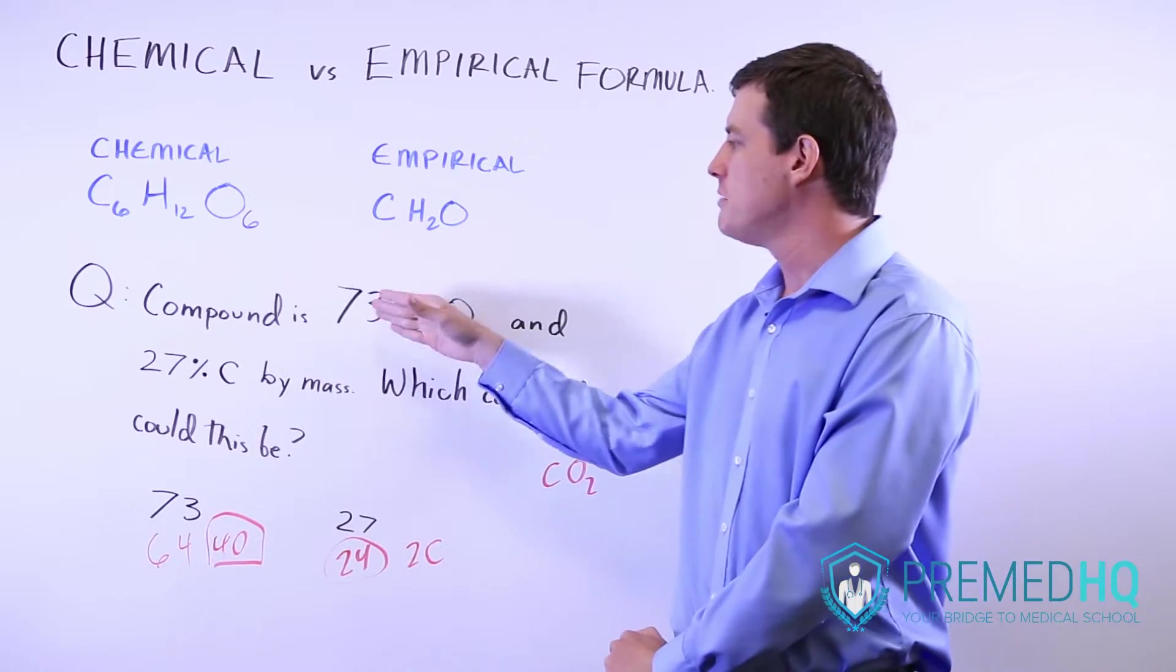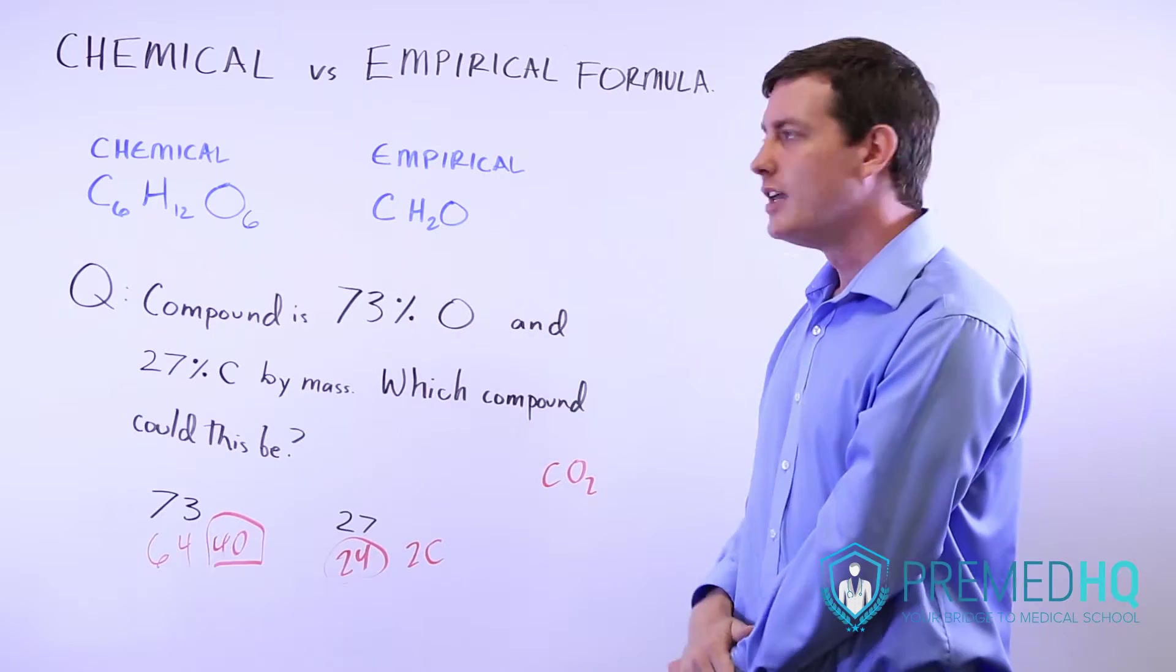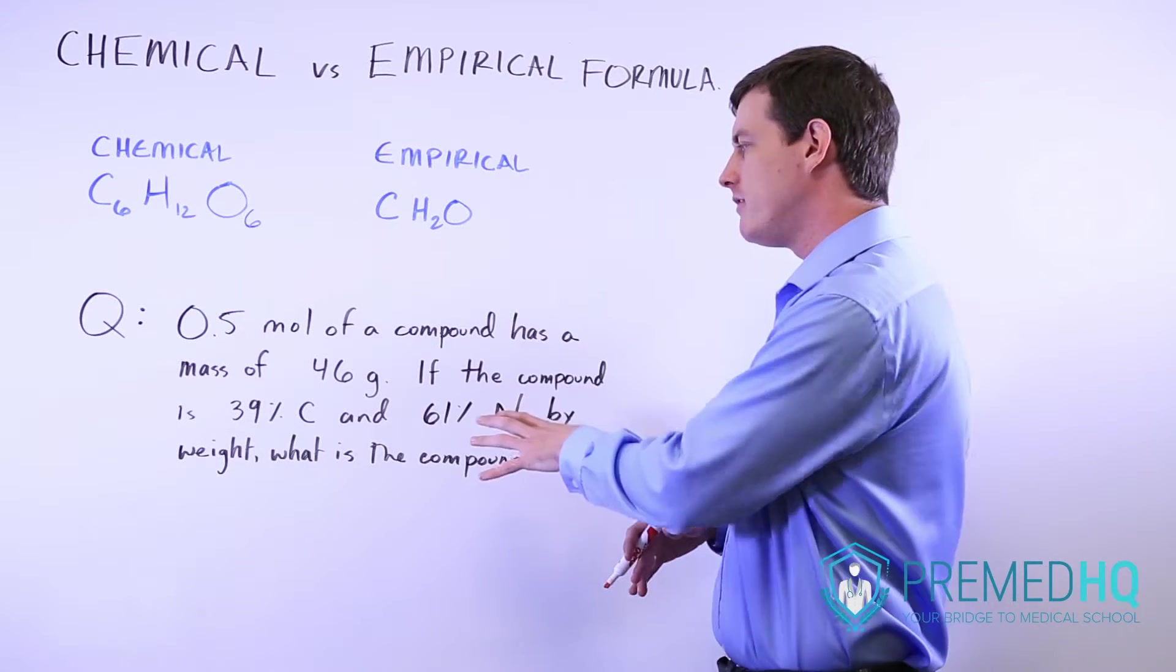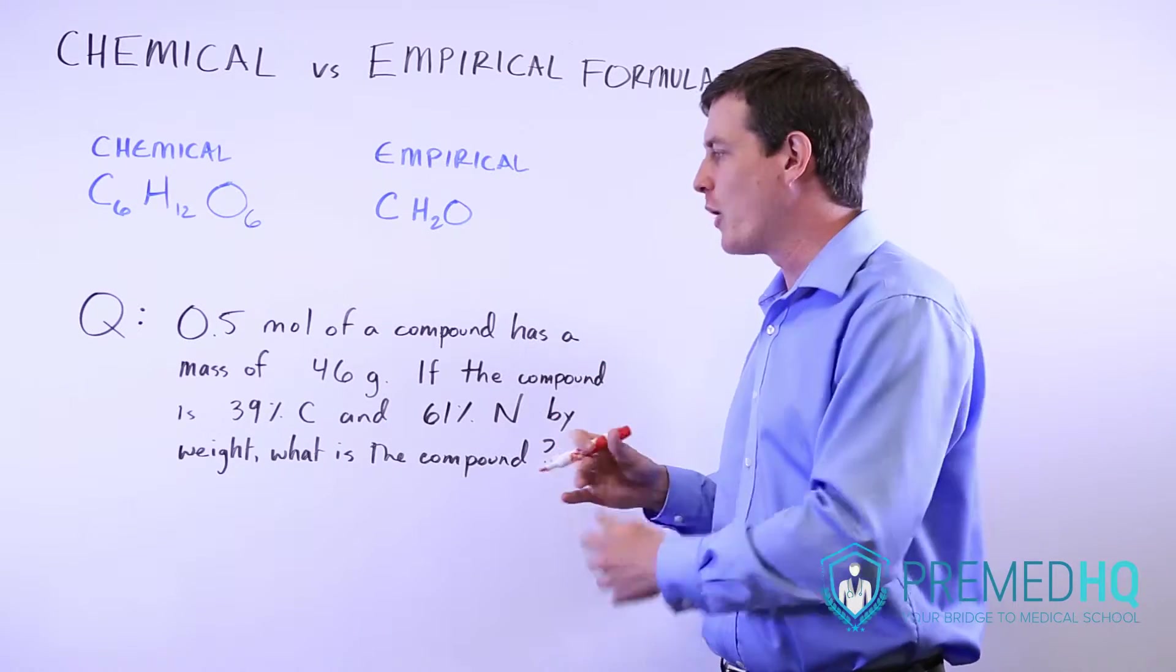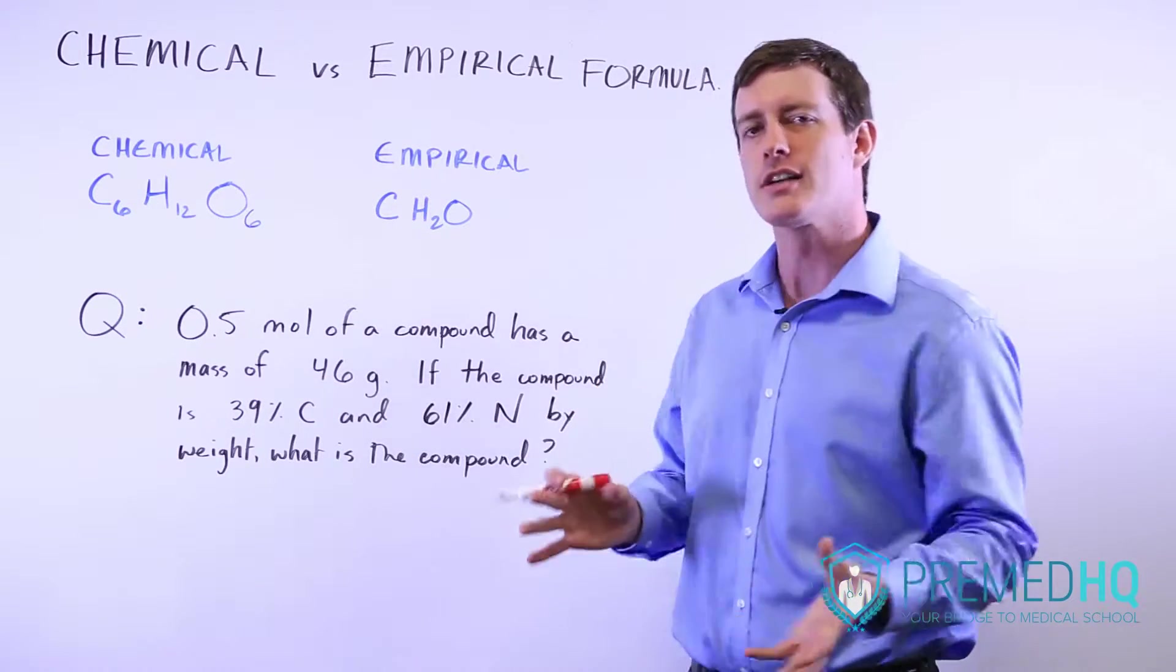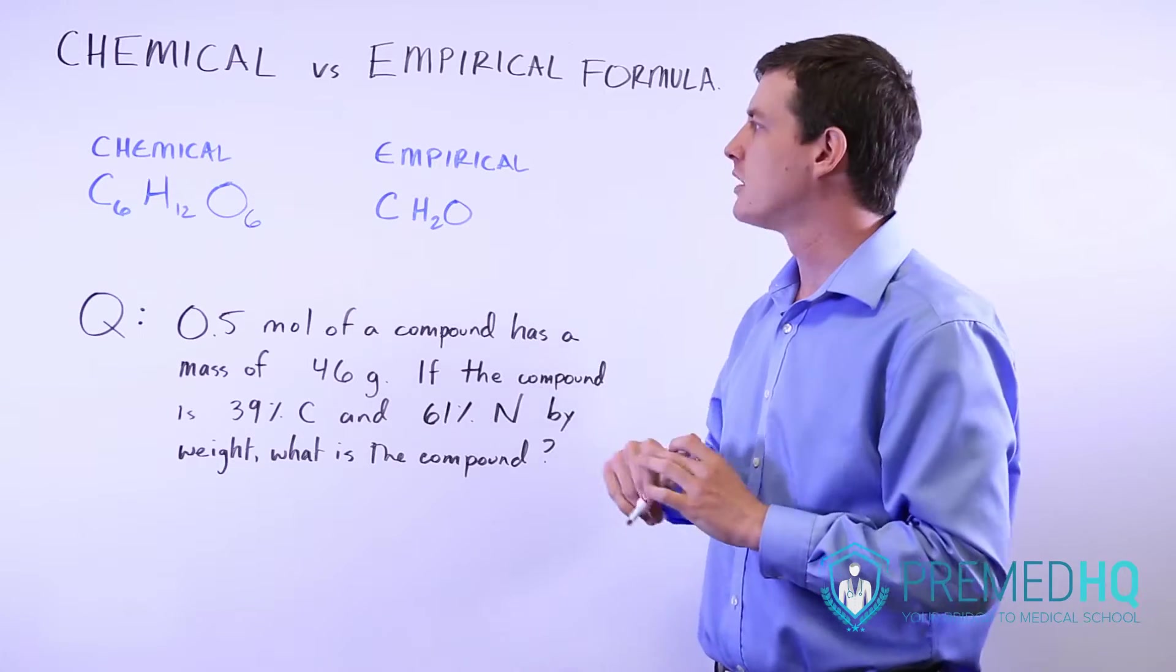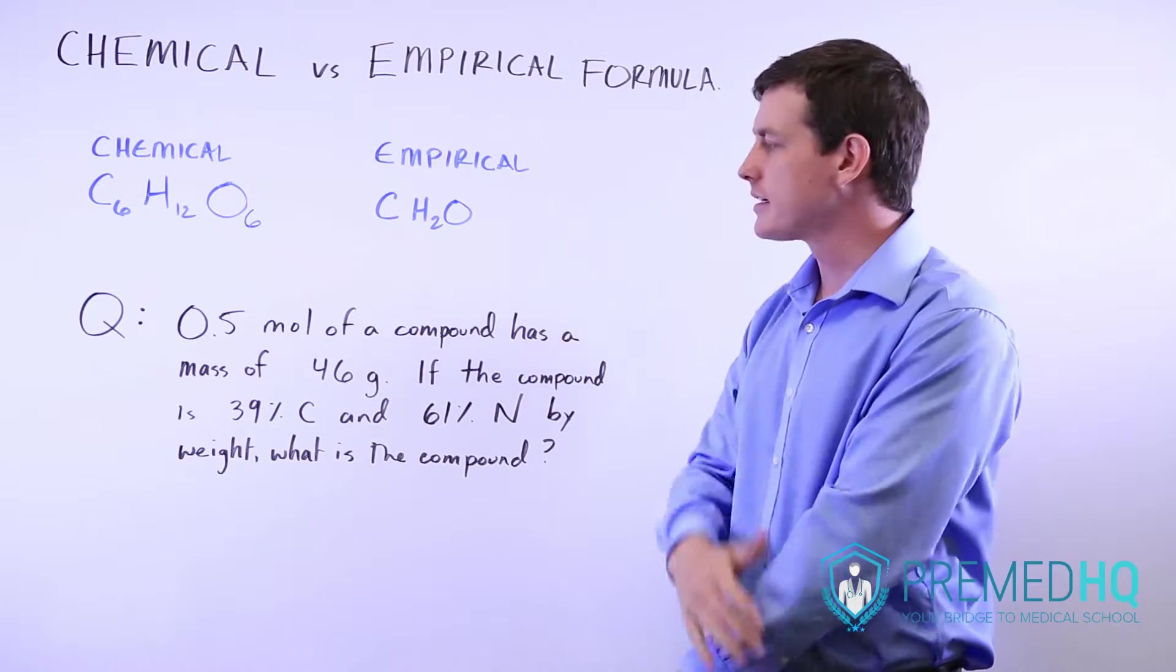Oftentimes when you see percent by mass but they don't tell you the mass of the compound, you're going to use empirical formula as a way of getting to your correct answer. Other times you might encounter a question where they give you the mass of a sample or the compound's atomic weight, and your job is to deduce what the compound is. If they give you the mass and percentages, you can go straight to the chemical formula rather than through the empirical formula.